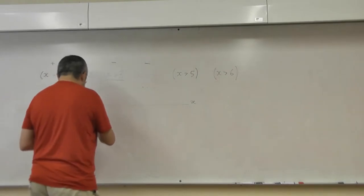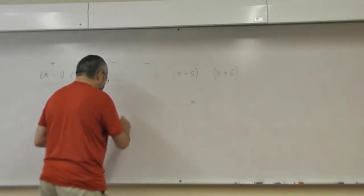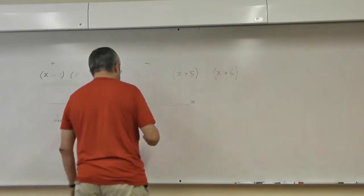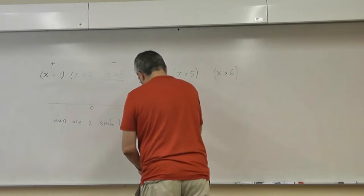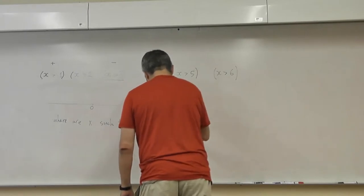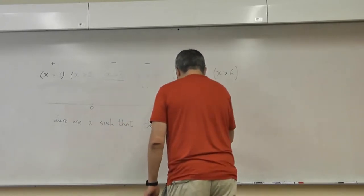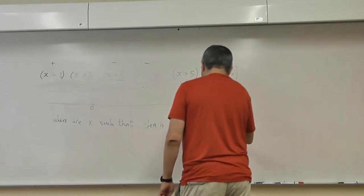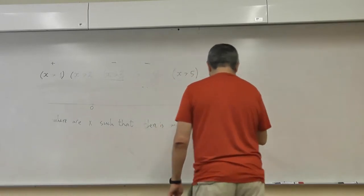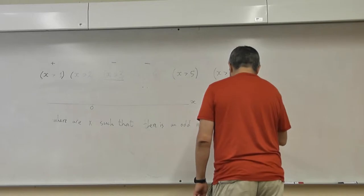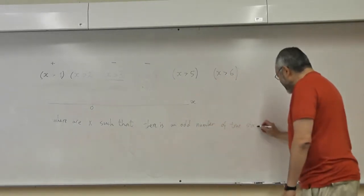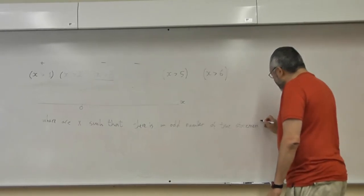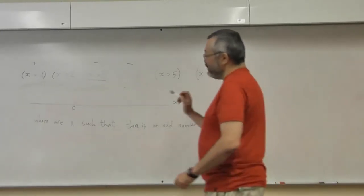Where are x's such that a number, there is an odd number of true statements. It's a bit strange, but still. Where are the x's for which the number of true statements is odd?